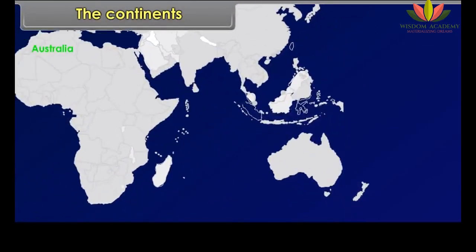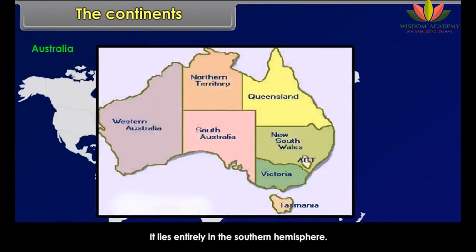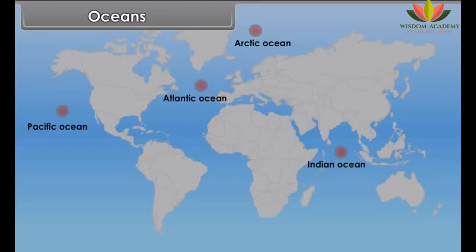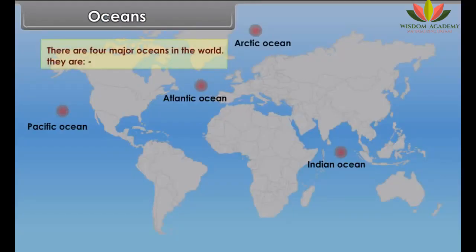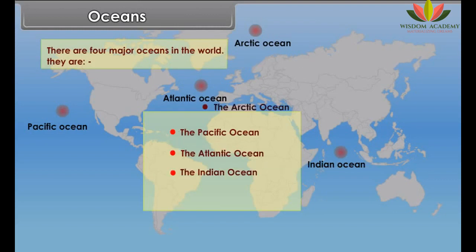Australia is the smallest continent in the world. It lies in the oceans. There are four major oceans in the world: the Pacific Ocean, the Atlantic Ocean, the Indian Ocean, and the Arctic Ocean.